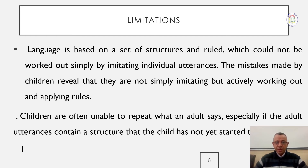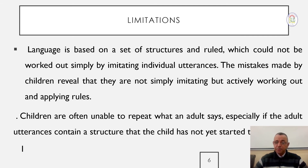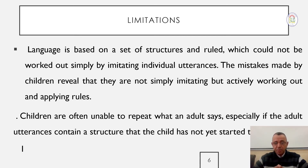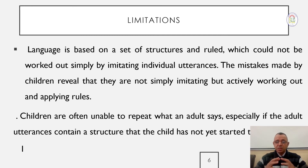Children are often unable to repeat what an adult says, especially if the adult's utterance contains a structure the child has not yet grasped. This means children can produce certain language forms on their own, yet cannot imitate those same forms from adults. This also shows that imitation is important in language acquisition, but it is not everything.